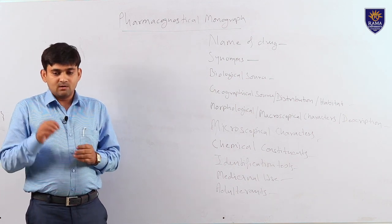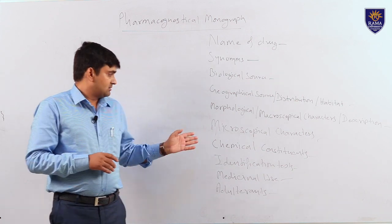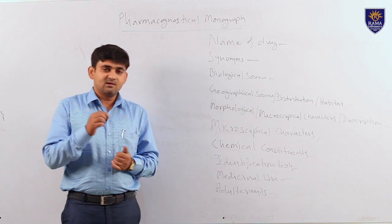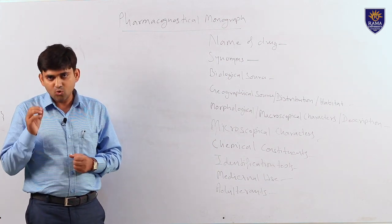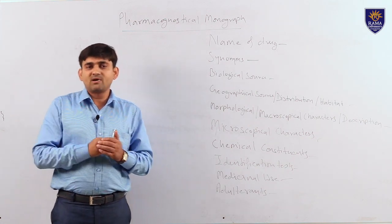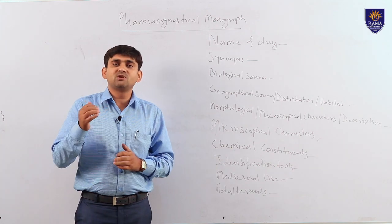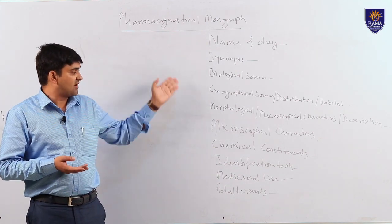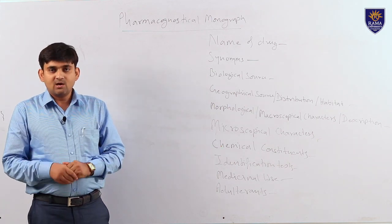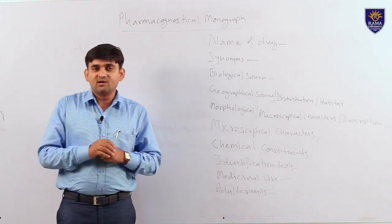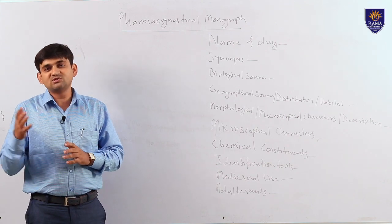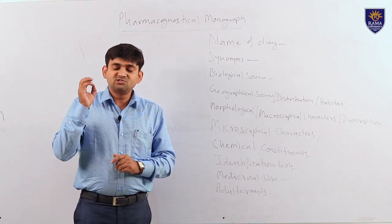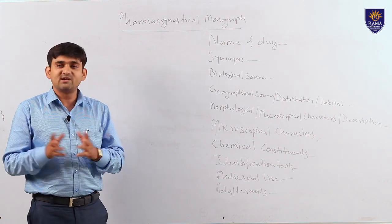Chemical constituents are the most important parameter of the monograph. Here we write the chief active constituents of a drug which are mainly responsible for pharmacological properties. For example, in the monograph of Cinchona, under chemical constituents we write quinine. Another component of the same drug, Cinchona, is quinidine, which is a cardiac depressant used in cardiac arrhythmia. So in this point we record the key active constituents responsible for particular pharmacological or medicinal properties.